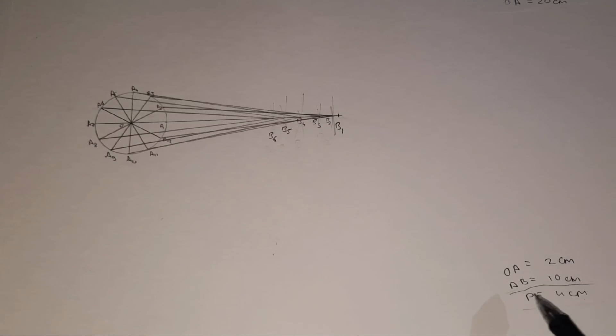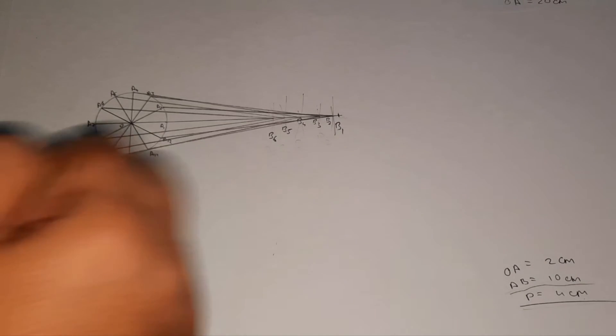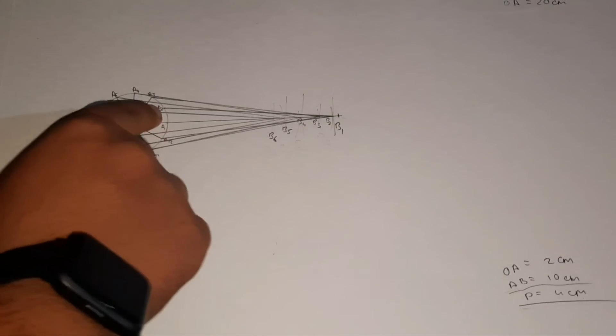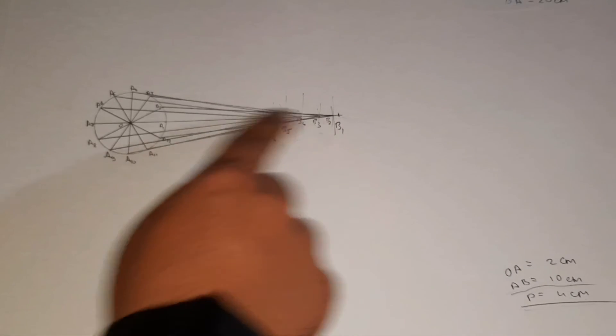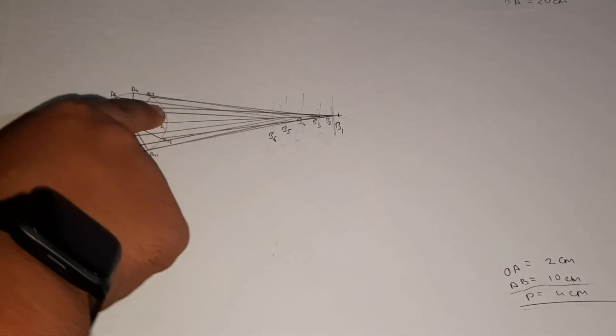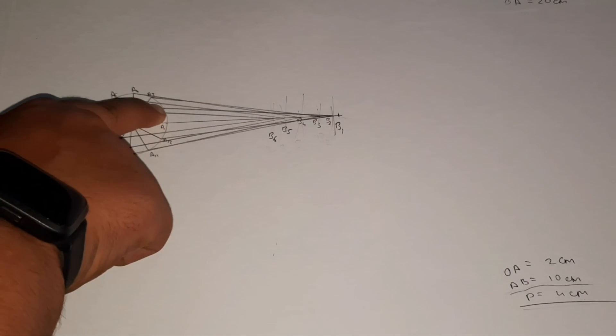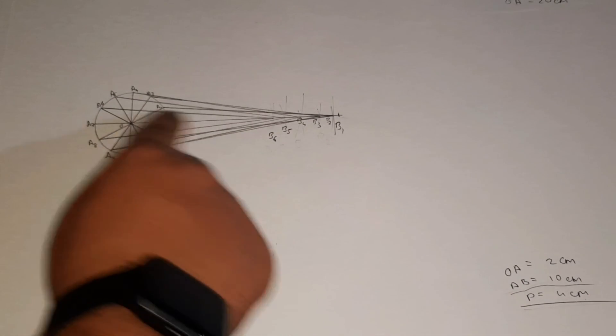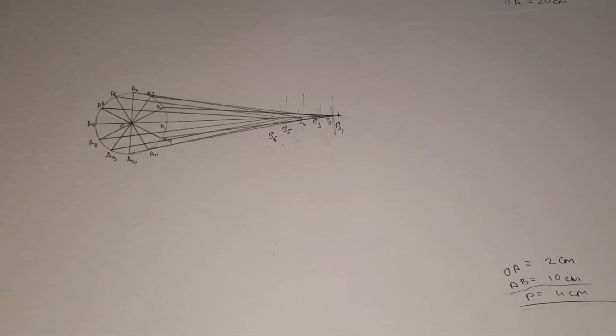As given, locus of point P is 4 cm. So we will take 4 cm as radius and make an arc on the line. For example, here A2 is joining B2, so we will take A2 as center and make arc on the line A2-B2. We will do this respectively with every point.